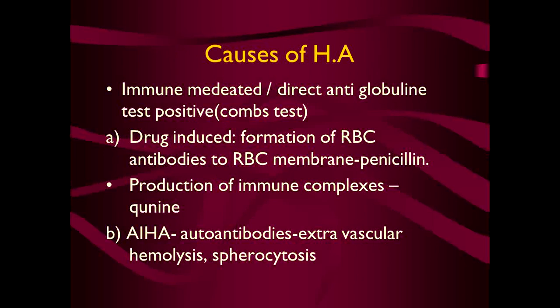The common causes of hemolytic anemia include Coombs-positive autoimmune hemolytic anemia, which includes drug-induced types in which there is formation of antibodies to the RBC membrane — the commonest example is penicillin — and secondly there is production of immune complexes. The classical example of immune complex production is quinine. The second class involves autoantibodies against the RBC membrane causing extravascular hemolysis.